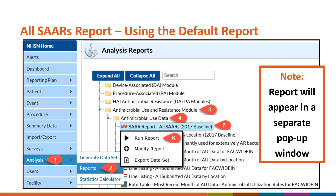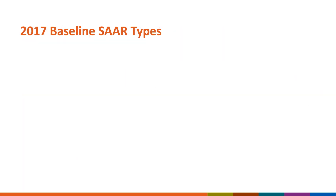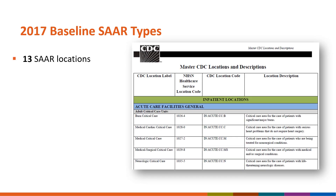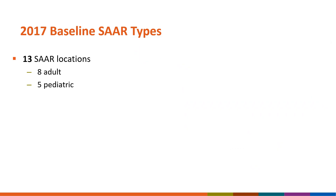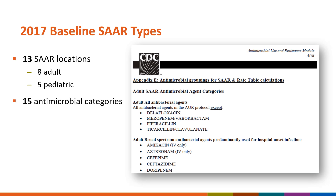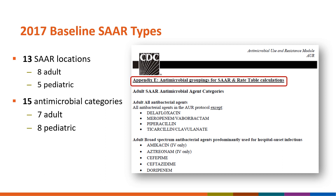The 2017 Baseline SAR can be generated for 13 locations, including 8 adult locations and 5 pediatric locations. The standard definitions of each of the SAR locations are available in the NHSN Locations chapter, which will also be referenced on the resource slide at the end of this presentation. The 2017 Baseline SAR can be generated for 15 antimicrobial categories, including 7 adult antimicrobial categories, 8 pediatric antimicrobial categories, and a SAR for all antibacterial agents for each age group. A complete list of the antimicrobial categories is available in Appendix E of the AUR Module Protocol.